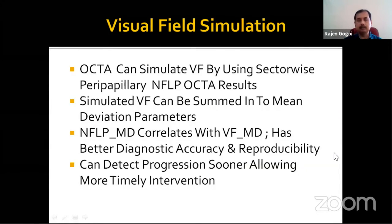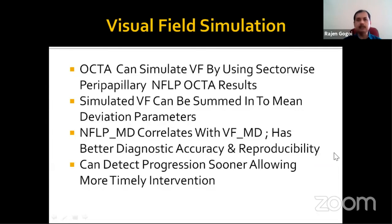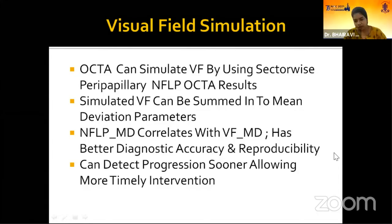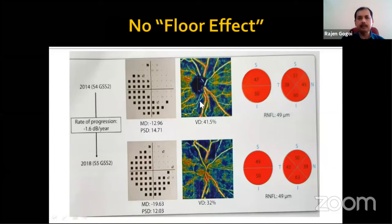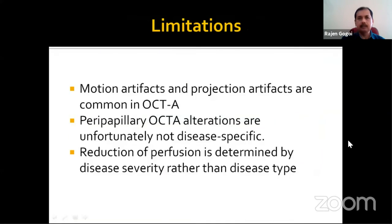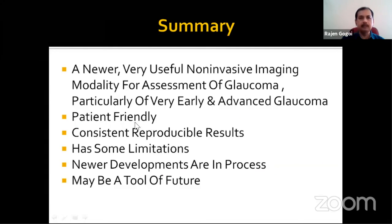Another good feature of OCT angiography is visual field simulation, which can simulate the visual field using sector-wise peripapillary NFL OCT results, and there is no floor effect in the visual field here. There are some limitations including motion artifact and projection artifact. In summary, OCT angiography is a newer non-invasive imaging modality for assessment of glaucoma, particularly valuable in very early and advanced glaucoma. It is patient-friendly with consistent and reproducible results. Despite some limitations, with newer developments it may well be a tool of the future.